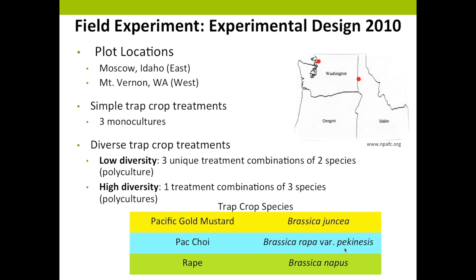We took what we learned in 2009 and expanded on this diversity experiment using our top three most attractive trap crop species. Again, we varied diversity but density remained the same, and we kept our same plot locations. For our simple trap crop treatments, we had three monocultures of each species. For our diverse trap crop treatments, we followed two different schemes: a low diversity scheme consisting of three unique treatment combinations of two species, and a high diversity scheme consisting of one treatment combination of all three species.